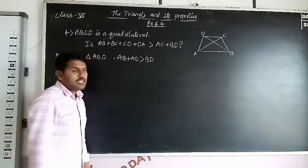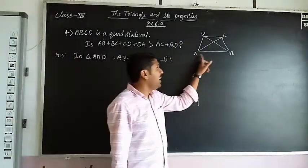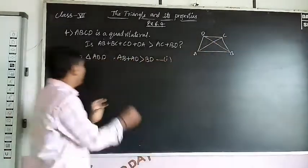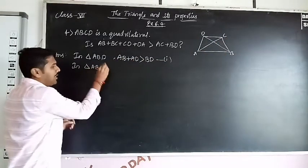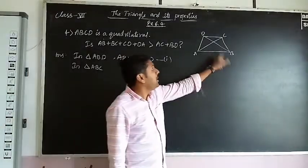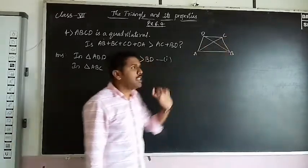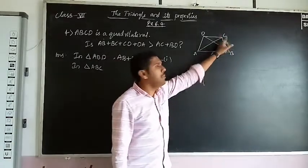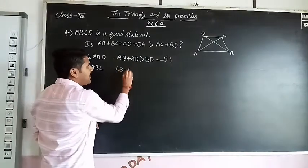Like that, take the upper triangle ABC. Next triangle, in a triangle ABC, take the remaining two sides. AB + BC is greater than AC. So second equation.